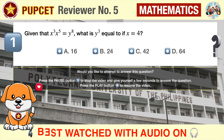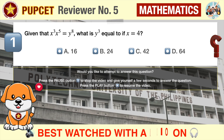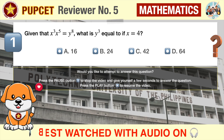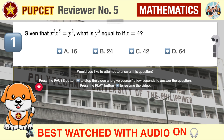Question number one: given that x raised to three times x raised to five equals y raised to eight, what is y raised to three equal to if x equals four? A) 16, B) 24, C) 42, D) 64.